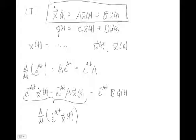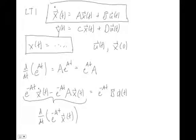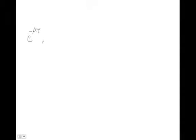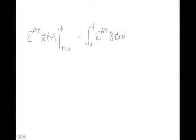By the chain rule — derivative of the first times the second plus second times derivative of the first — and since these are matrix-vector equations we can't change the order. So we have a d/dt equation equal to e^(-At)·Bu(t). Then we integrate both sides from zero to t, where t is the instant we're interested in, using tau as the dummy variable of integration: the integral from 0 to t of e^(-Aτ)·Bu(τ)dτ.